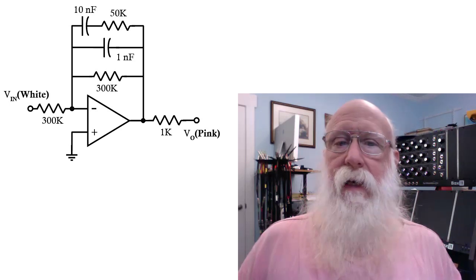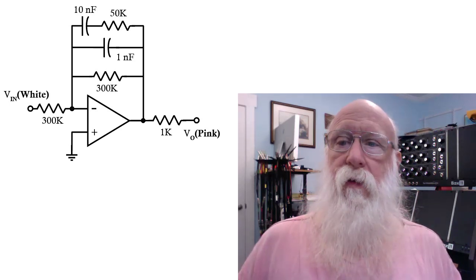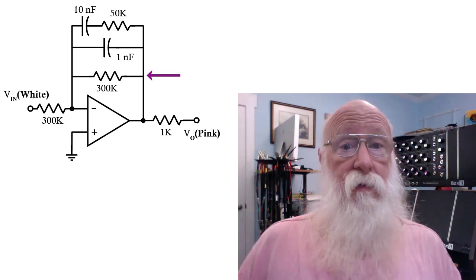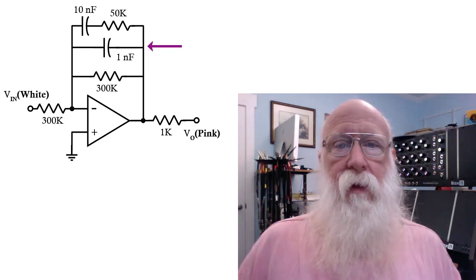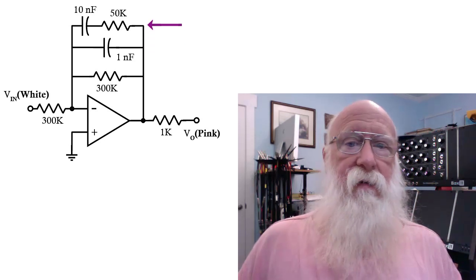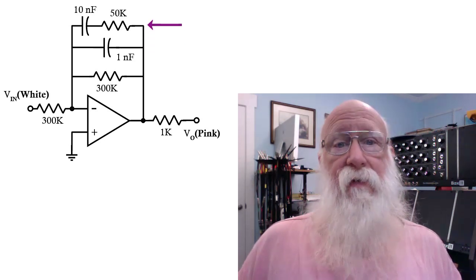First note that in our feedback network there are three branches. There is a single fixed resistor, 300K, there is a single capacitor, 1 nanofarad, and there is a series combination of a 10 nanofarad and a 50K.